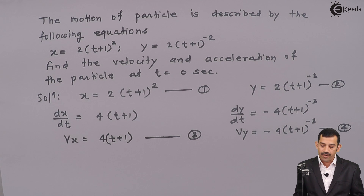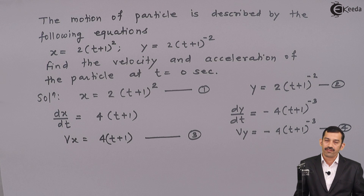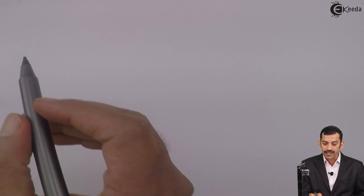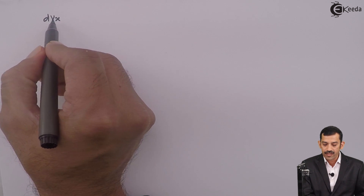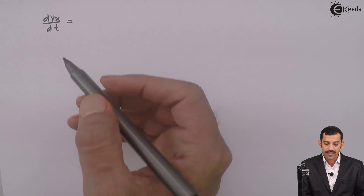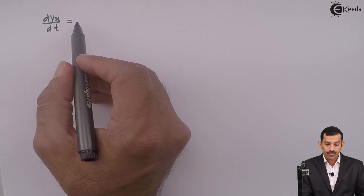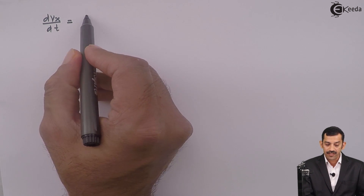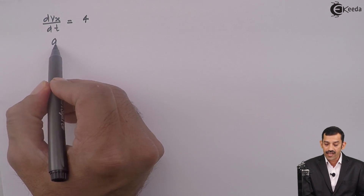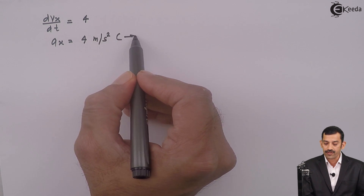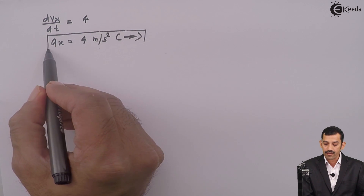Once we have the equations of vx and vy, differentiating them gives the components of acceleration along x and y. Differentiating equation 3, dvx by dt: since vx is 4(t + 1), the differentiation gives ax = 4. Therefore, ax, the component of acceleration, is 4 meters per second squared — a positive answer, meaning direction is rightward. This is equation number 5.